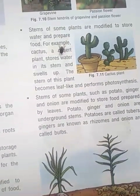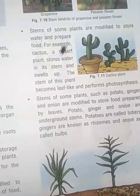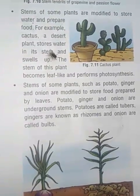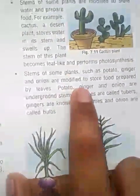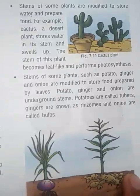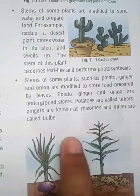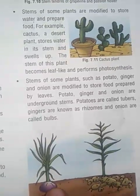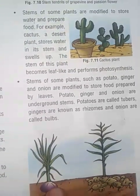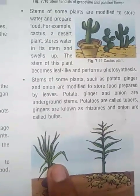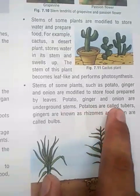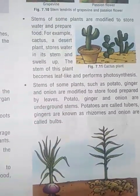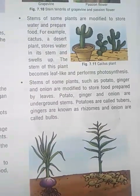Stems of some plants such as potato, ginger, and onion are modified to store food. Examples include potato, ginger, and onion. These plants have stems that are embedded in the soil and store food used by the organism. Potatoes are called tubers, gingers are known as rhizomes, and onions are known as bulbs. These are the kinds of modified stems.